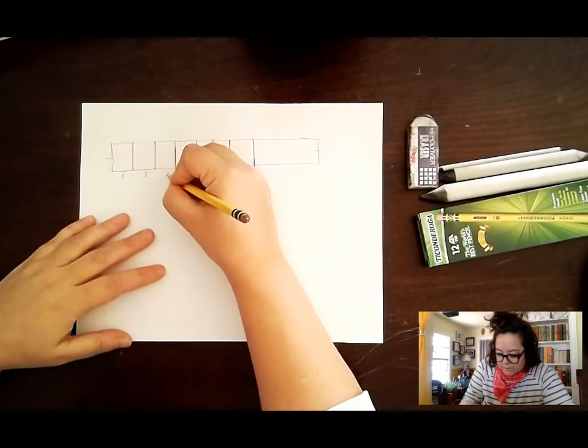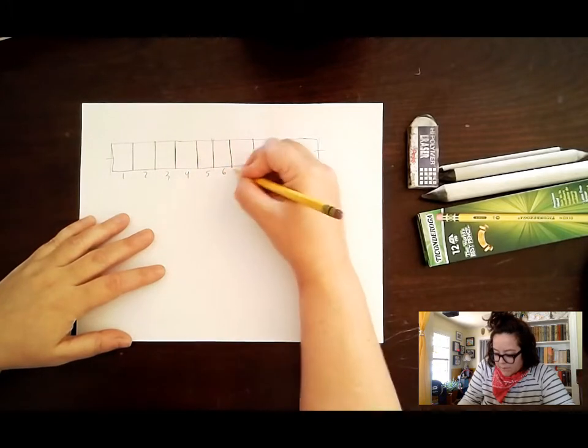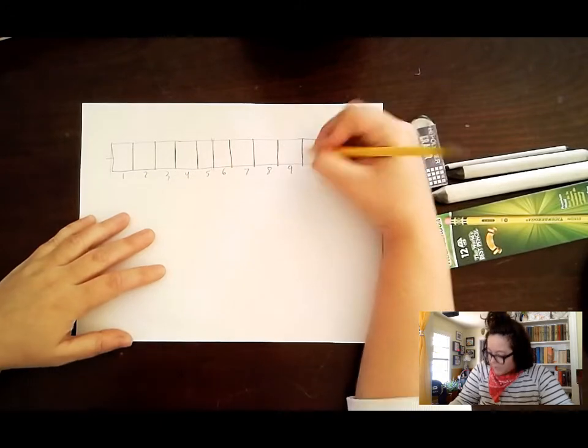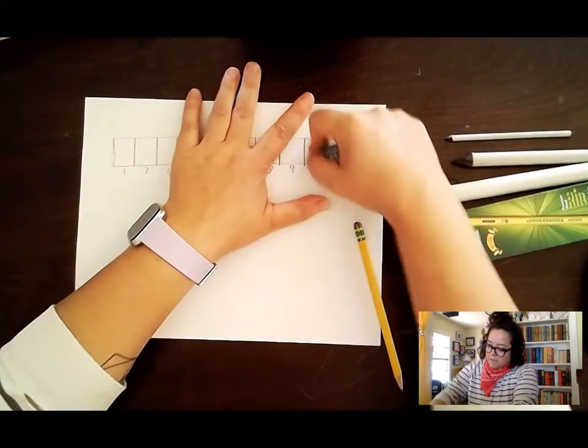You're going to divide out that rectangle into nine equal-ish spaces. Let's see, one, two, three, four, five, six, seven, eight, nine. So I have a little extra, so I'm just going to end it and erase off.